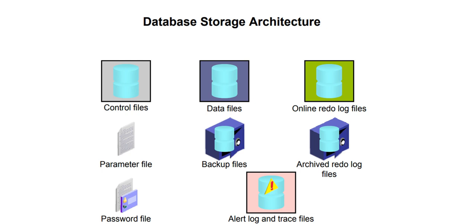Storage here signifies physical entities. Memory and background processes are logical entities — whenever a database instance gets allocated, the memory region and background processes initiate. But in the case of database storage architecture, these are physical files existing in physical locations. These files are very important; without them you won't be able to manage and monitor the database efficiently. If any file is missing, you won't be able to start or function your database.